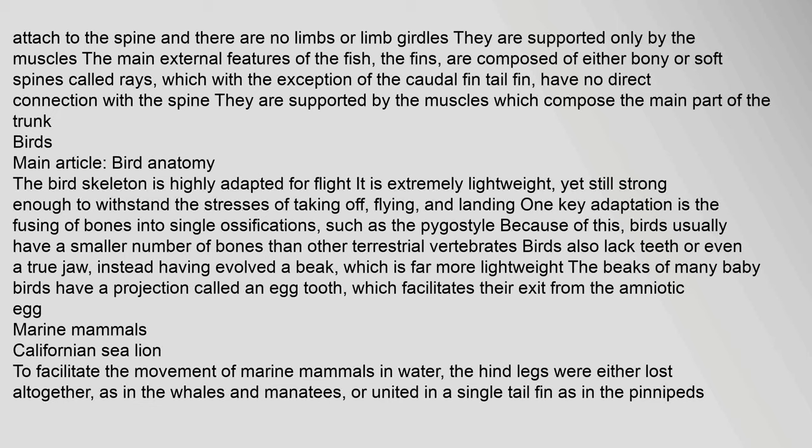The bird skeleton is highly adapted for flight. It is extremely lightweight, yet still strong enough to withstand the stresses of taking off, flying, and landing. One key adaptation is the fusing of bones into single ossifications, such as the pygostyle. Because of this, birds usually have a smaller number of bones than other terrestrial vertebrates. Birds also lack teeth or even a true jaw, instead having evolved a beak, which is far more lightweight. The beaks of many baby birds have a projection called an egg tooth, which facilitates their exit from the amniotic egg.